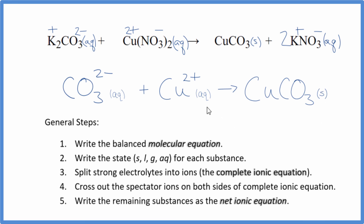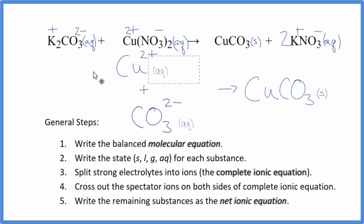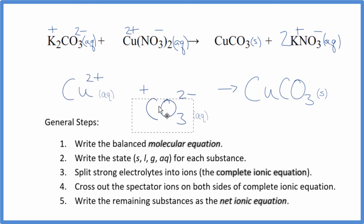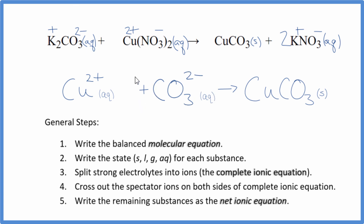This is the balanced net ionic equation for K2CO3 plus Cu(NO3)2. Note that charge is conserved — we have a 2 minus and a 2 plus; they balance out to give a net charge of 0. You can also count the atoms up, and they're balanced as well. Often we'll see the positive ion put first with net ionic equations — it doesn't really matter, perhaps it looks a little nicer. This is Dr. B with the balanced net ionic equation for potassium carbonate plus copper 2 nitrate. Thanks for watching.